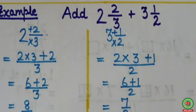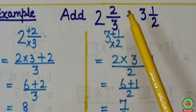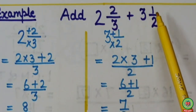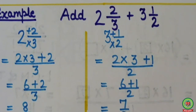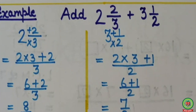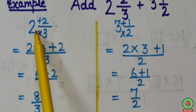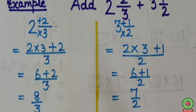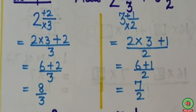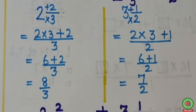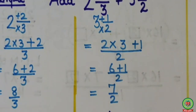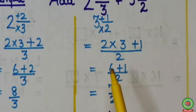Let's take one more example. Here we have to add 2 whole number 2 upon 3 and 3 whole number 1 upon 2. First of all, we have to change the mixed fractions into improper to make our calculation easier. Here, 2 whole 2 upon 3 will come: 3 into 2 plus 2 upon 3. 3 twos are 6, so 6 plus 2 upon 3 equals 8 upon 3. On the other hand, 3 whole 1 upon 2: 2 into 3 plus 1 upon 2. 3 twos are 6, so 6 plus 1 upon 2 equals 7 upon 2.